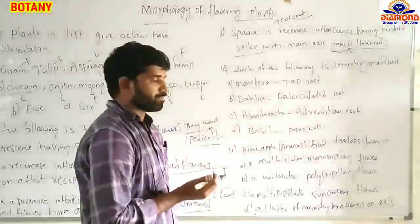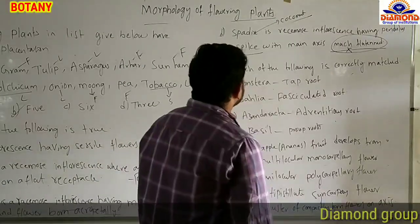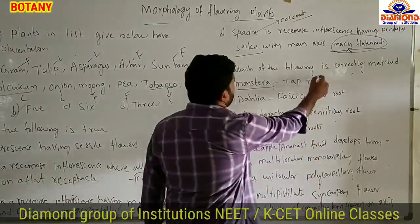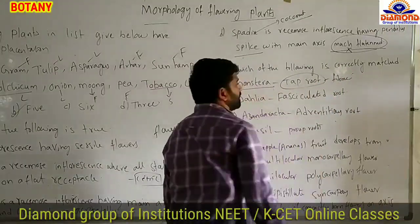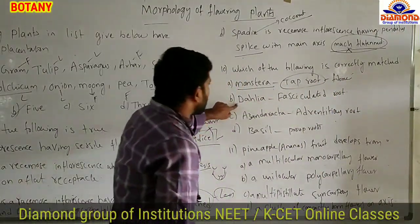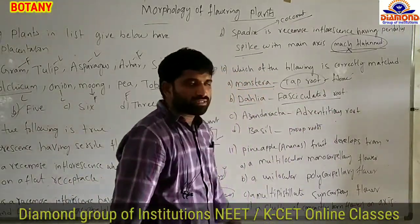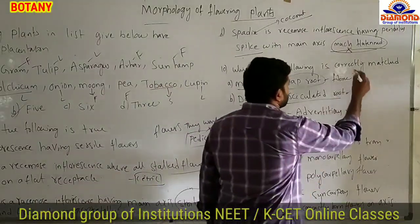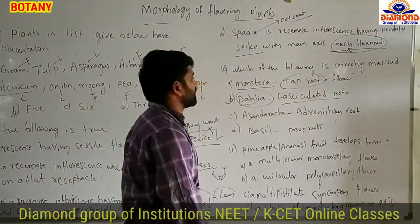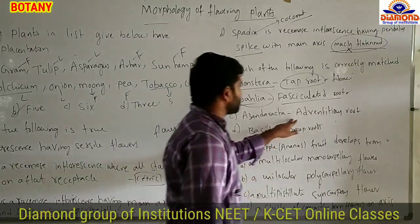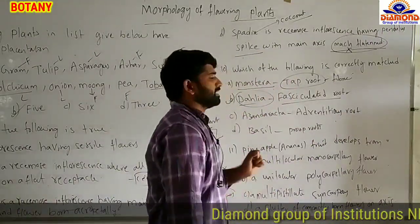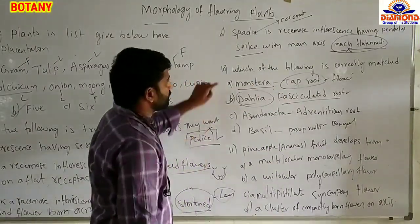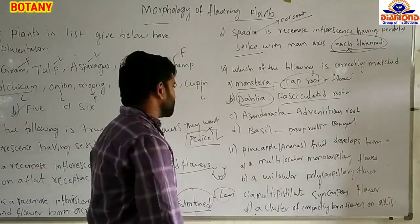Next question: which of the following is correctly matched? Option A: Monstera — tap root system — incorrect; Monstera shows fibrous root system with many root caps. Option B: Dahlia — fasciculated root — correct; Dahlia shows fasciculated roots where many tuber-like structures develop in a bunch. Option C: Azadirachta indica (neem) — adventitious root — incorrect; neem has a tap root. Option D: Banyan — prop root — this is the correct example for prop root, not 'basal.' The answer is option B — Dahlia with fasciculated roots is correctly matched.